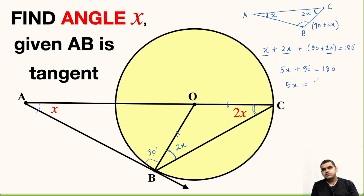5x will be equal to 180 minus 90 that is 90 degrees. x will be 90 upon 5 which will give us 18.